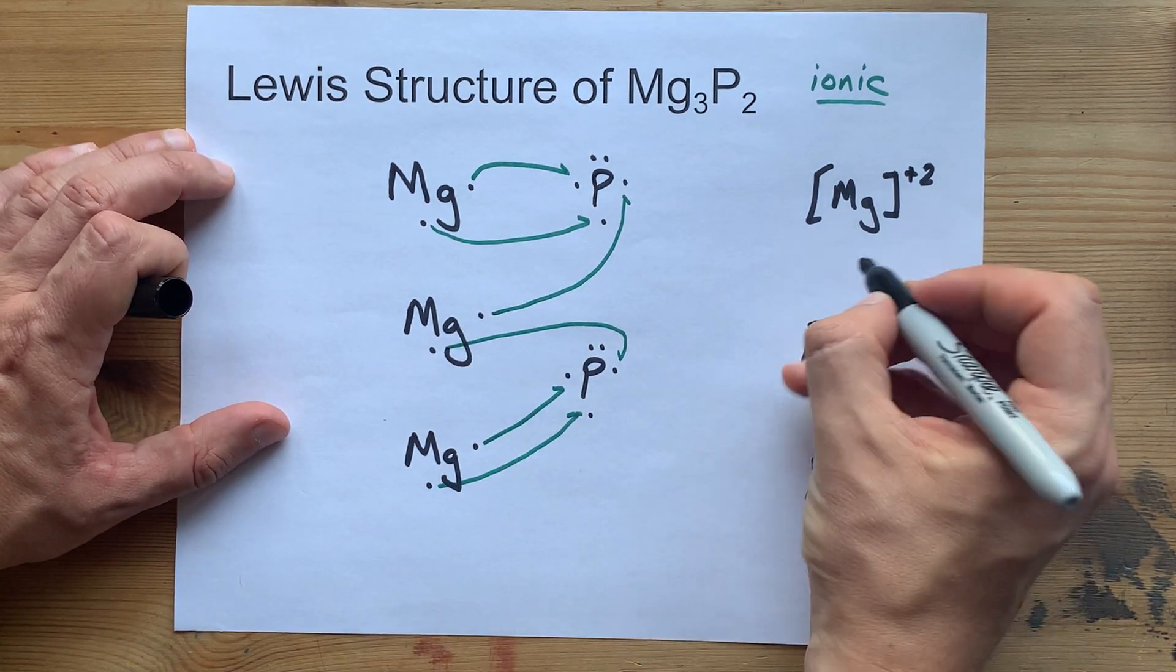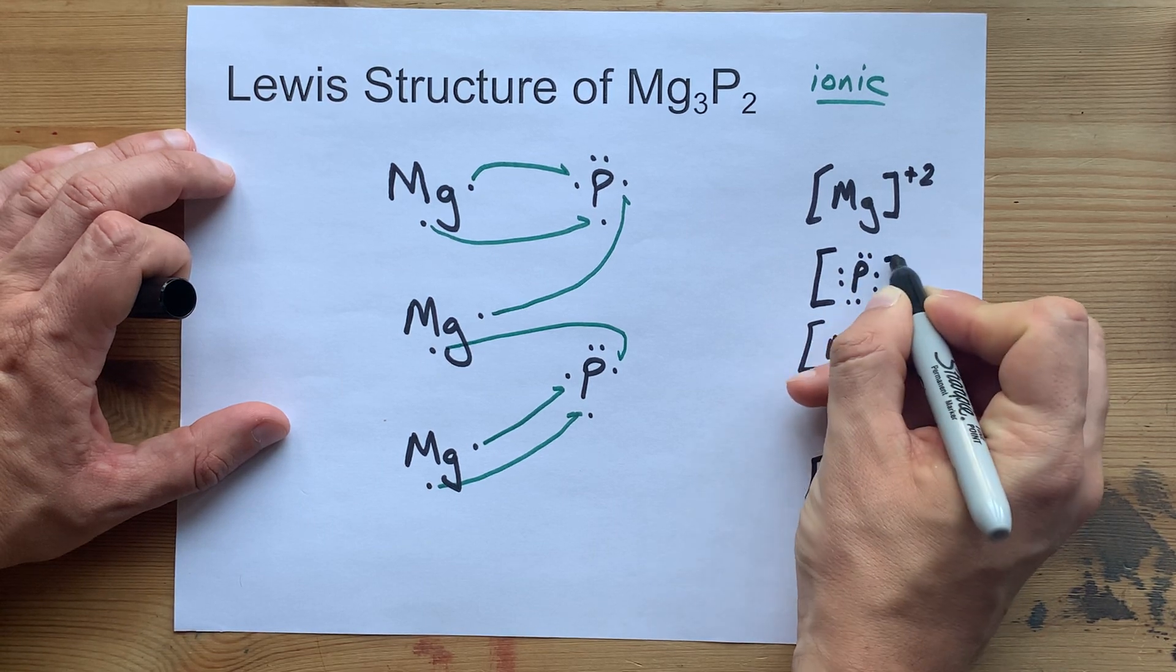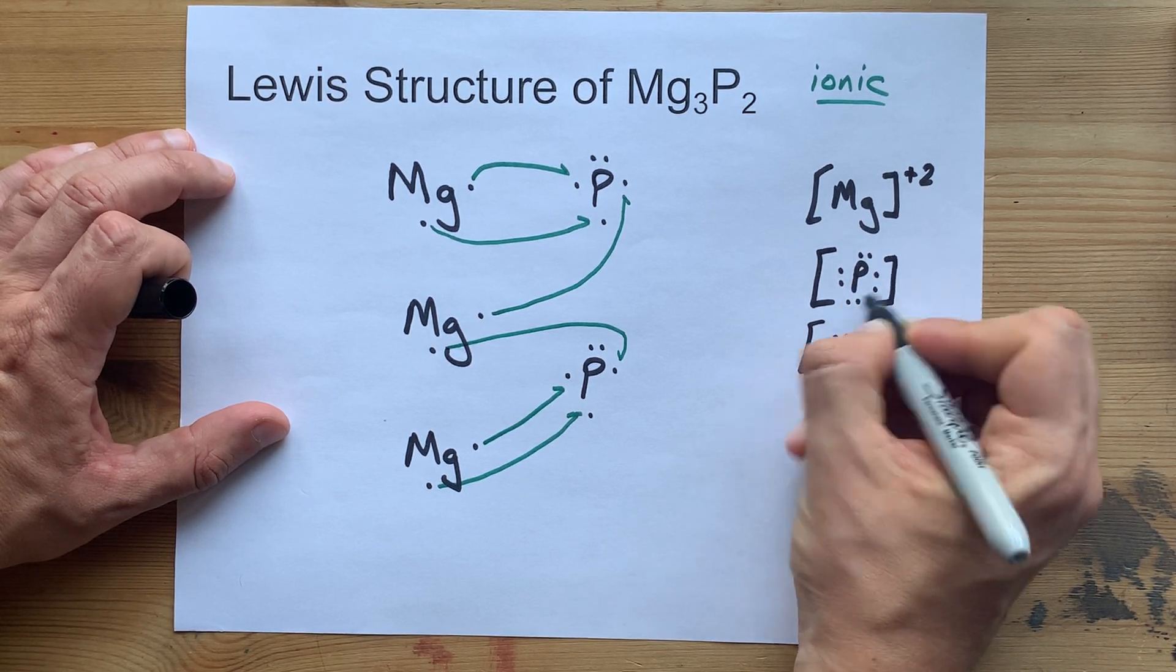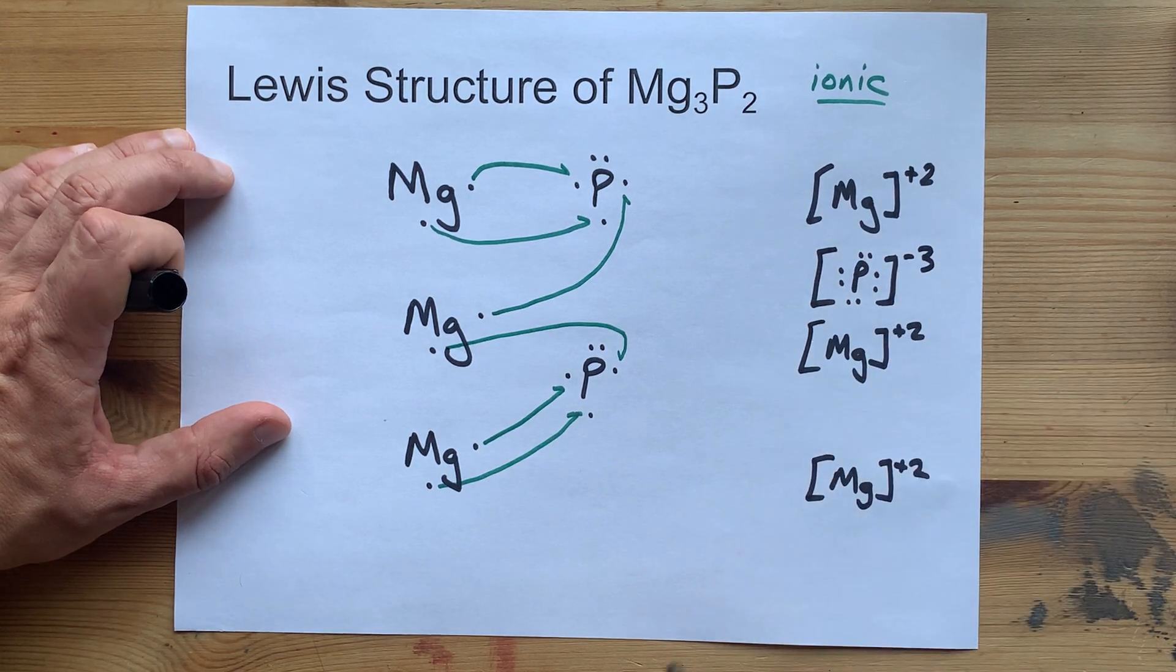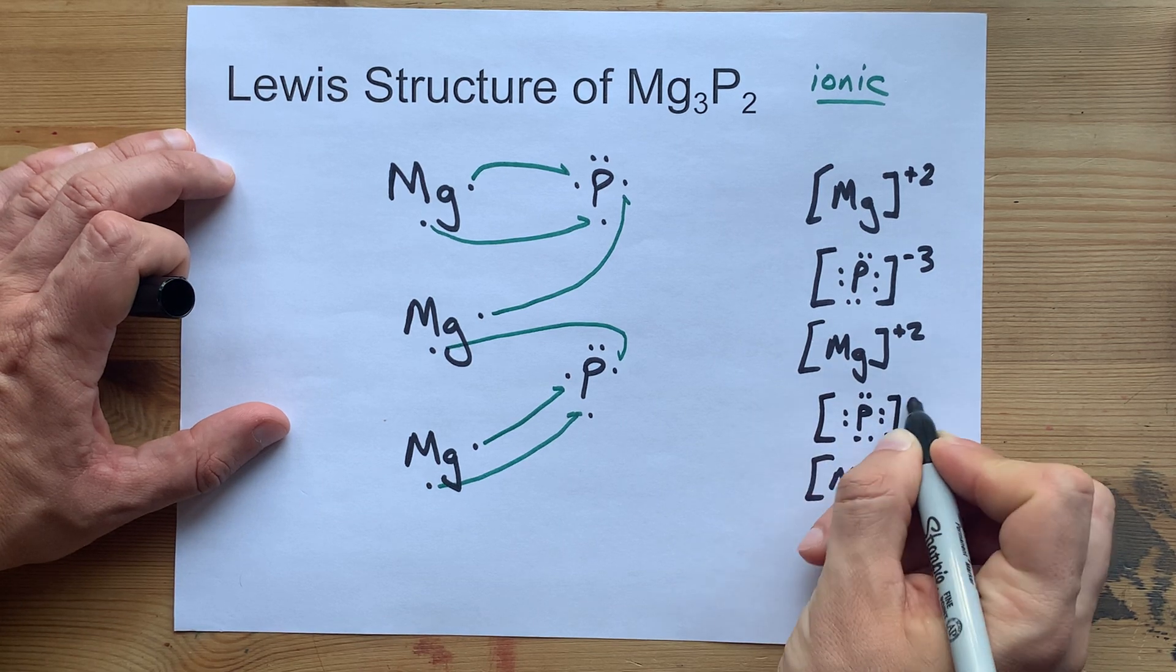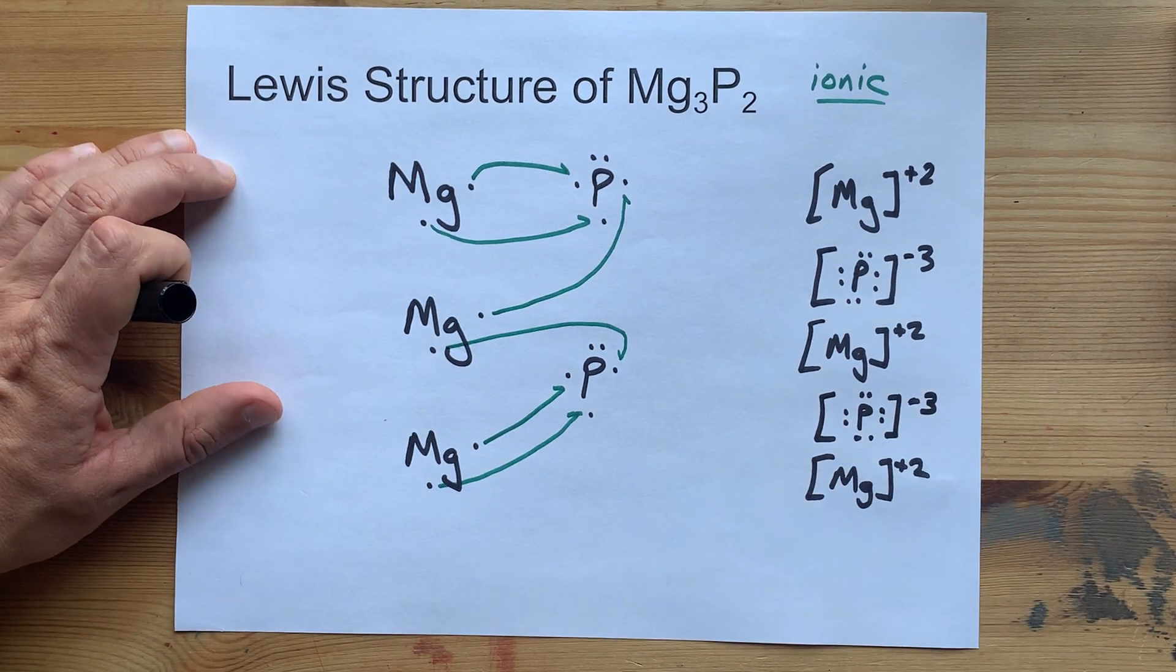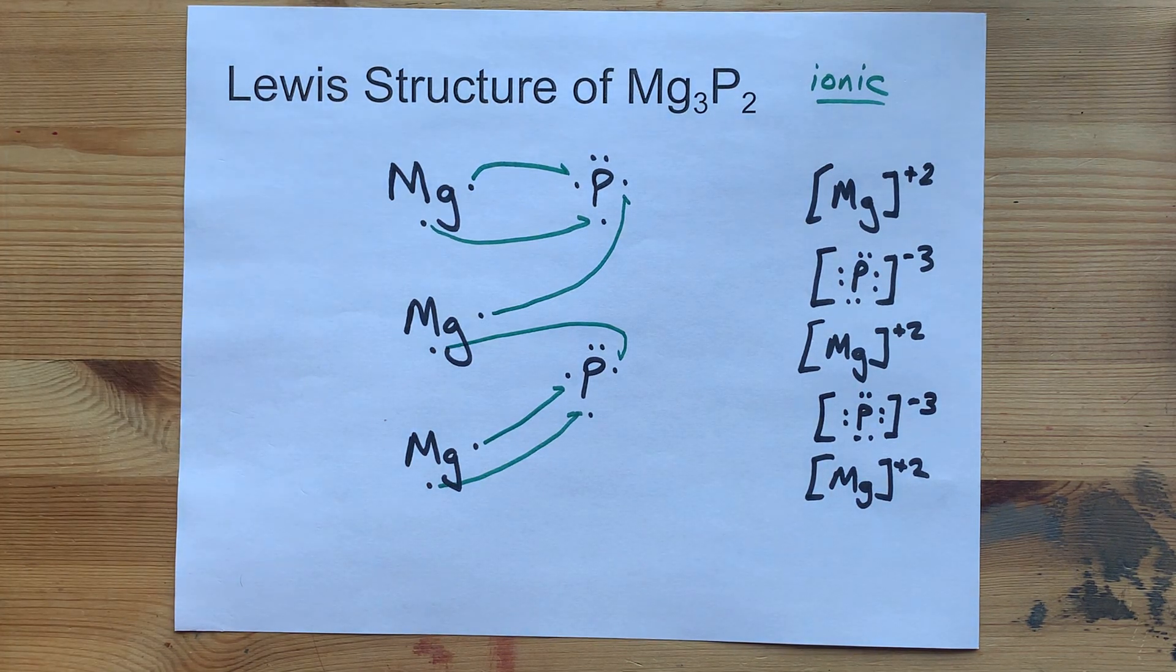Similarly, you'll draw the phosphorus. Phosphorus brought 5 and gained 3 each, so it now has a full octet of 8 electrons around it. That is 3 extras. That's a charge of minus 3. There's me drawing it out another time. Here is your complete Lewis structure for magnesium phosphide.